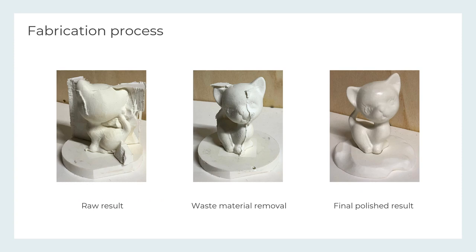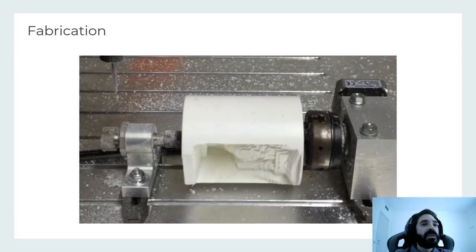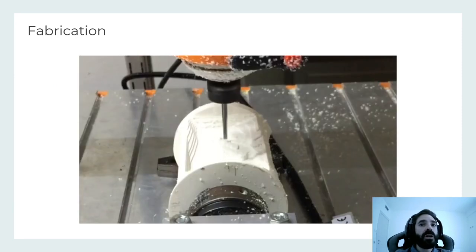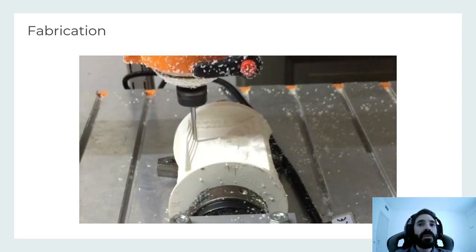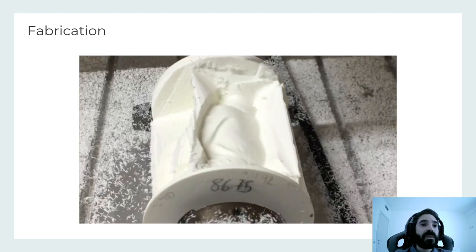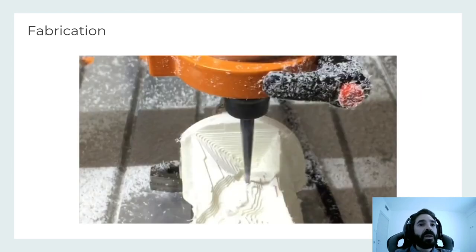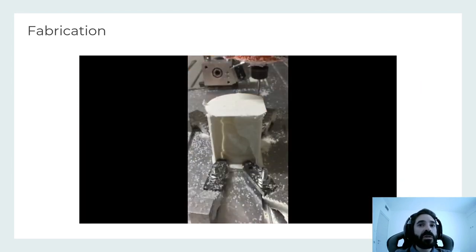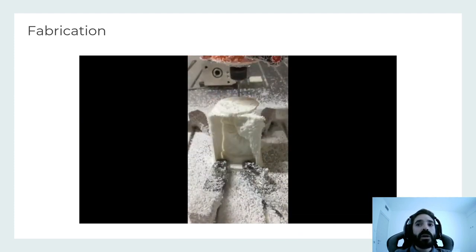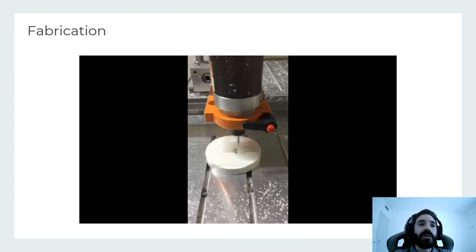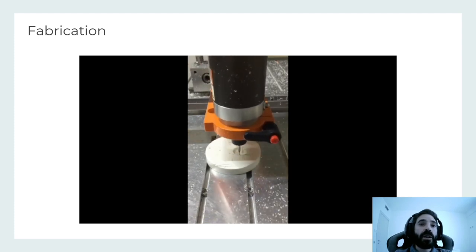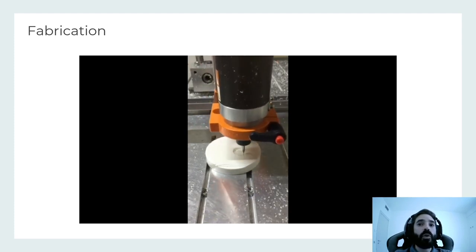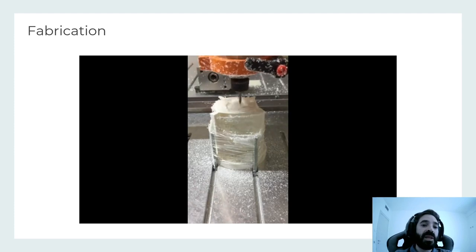In this video, we show our machine during actual fabrication of the Buddha model. We can see fabrication of the extreme regions of the model. For the first region, the block can leave its flat base. For the second, the support is used to secure and align the block.